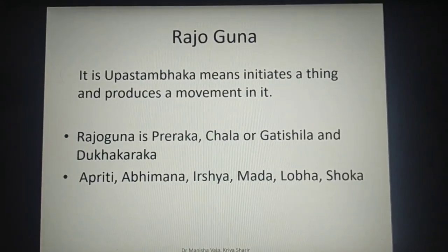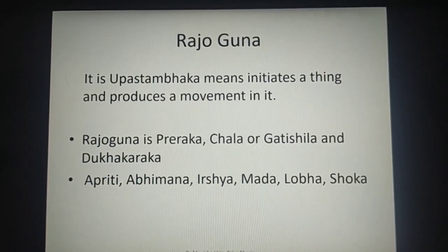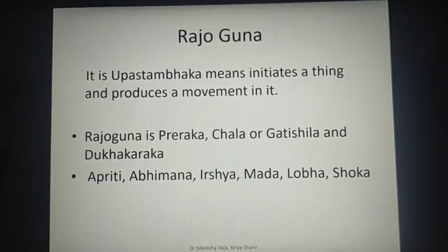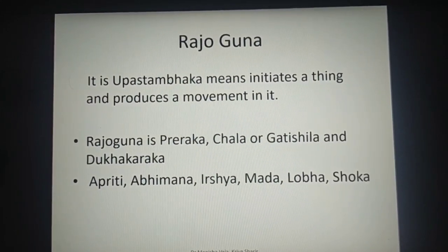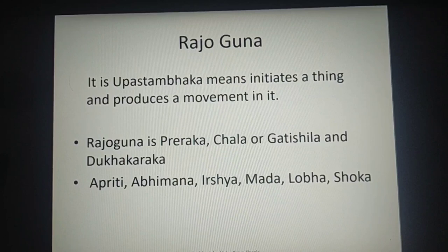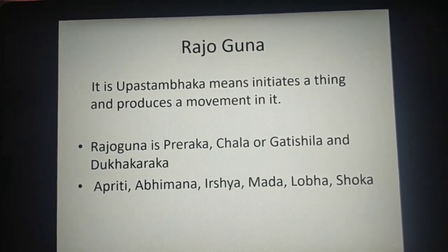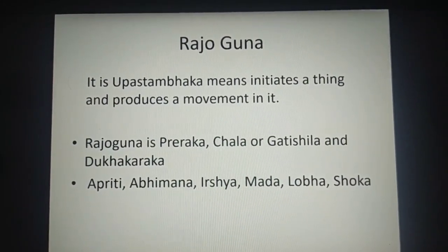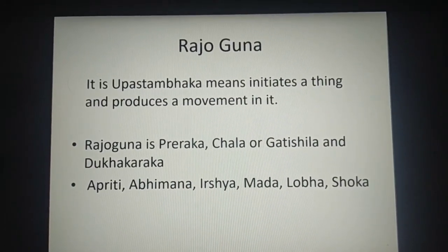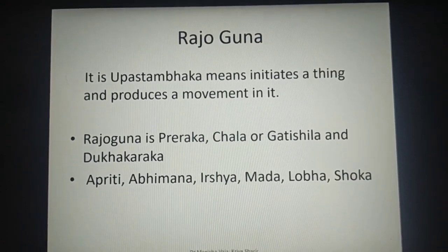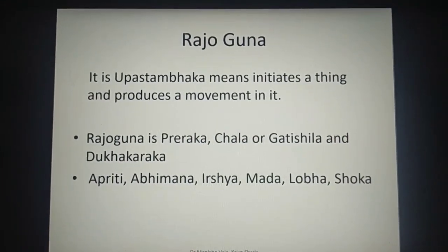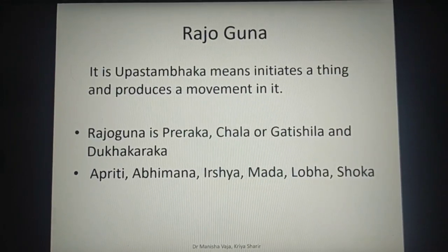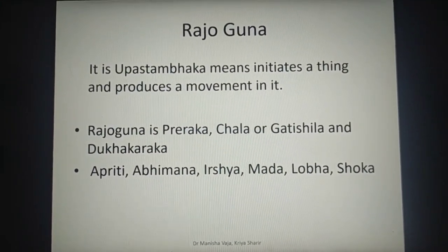Rajogun is Upastambak — it initiates a thing and produces movement in it. Recall the Sloka about Pitta being lame, Kapha being lame, and that all kinds of movements and initiation are because of the Vayu Dosha. Similarly, Rajogun is responsible for initiation. Rajogun is Prerag, Chala or Gatishil, and Dukha Karak — meaning it has motion and creates suffering.